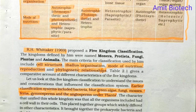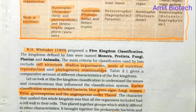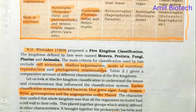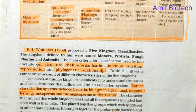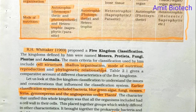The earlier system brought together the prokaryotic bacteria and the blue-green algae with other groups which were eukaryotic. It also grouped together unicellular and multicellular organisms — for example, Chlamydomonas and Spirogyra were placed together. The classification also did not differentiate between the heterotrophic fungi and the autotrophic green plants, even though fungi had chitin in their cell walls while green plants had cellulose.